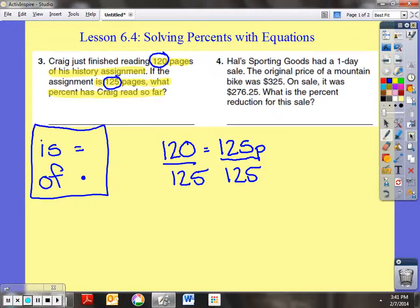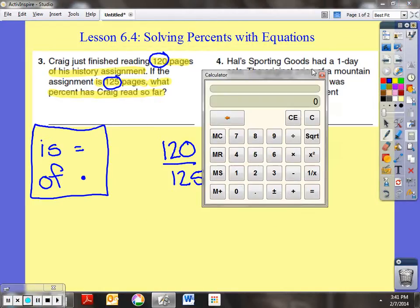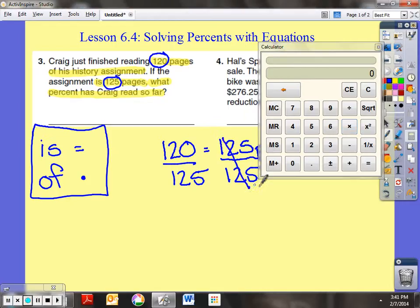And now I will use my calculator. 125 divided by 125, that cancels out. So I'm left with 120 divided by 125. Now that equals 96 hundredths.